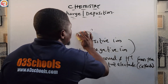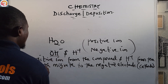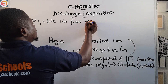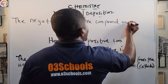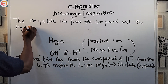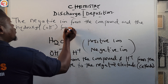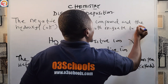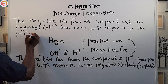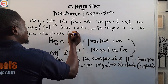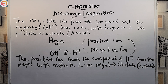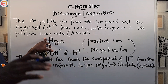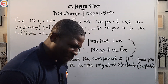The negative ion from the compound and the hydroxyl ion — the OH-minus — from the water both migrate to the positive electrode, that is the anode.